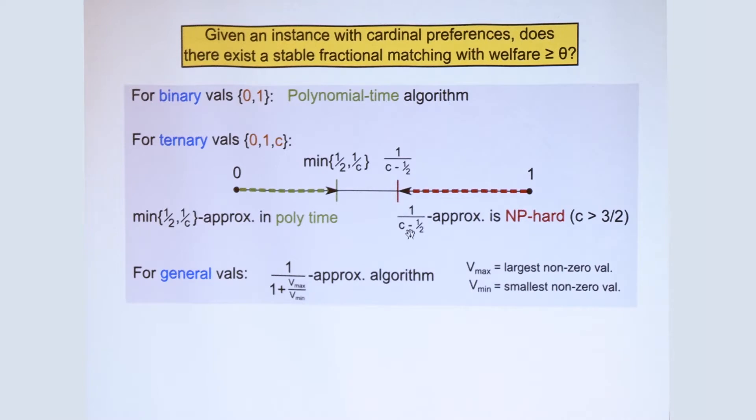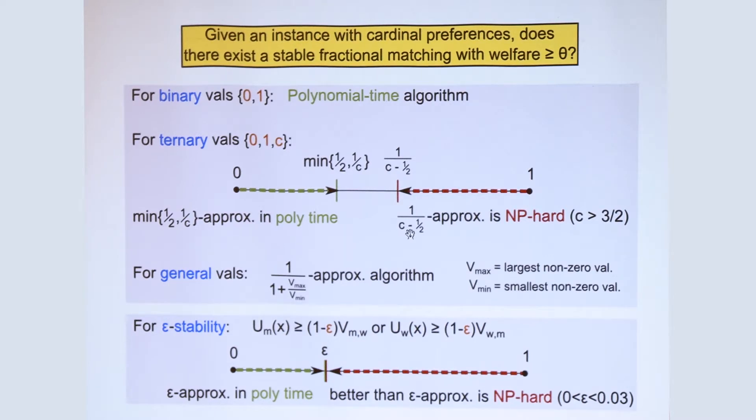So all of these results that I just described are for the exact version of stability. We also study approximate stability. So a matching is epsilon stable. It's just like the original version of stability, but the utility thresholds are now scaled by 1 minus epsilon.